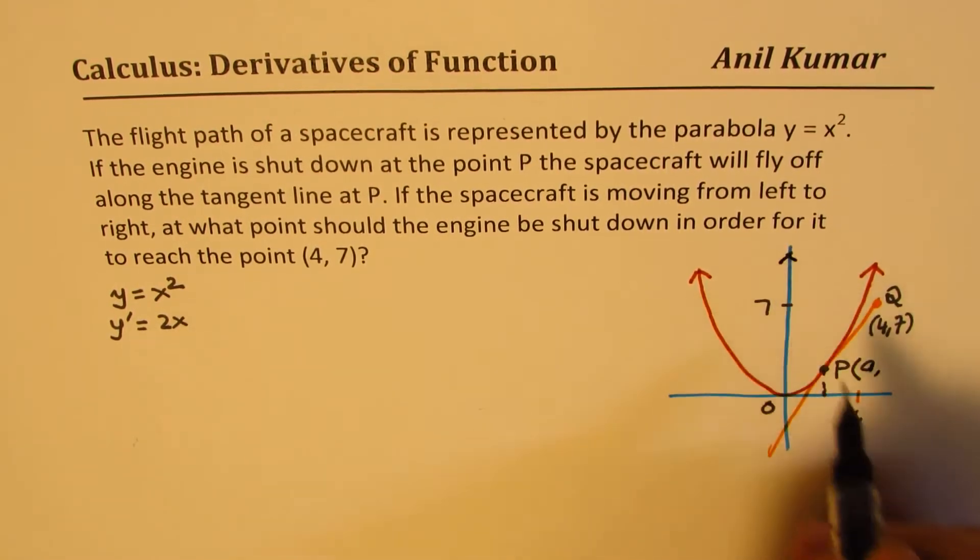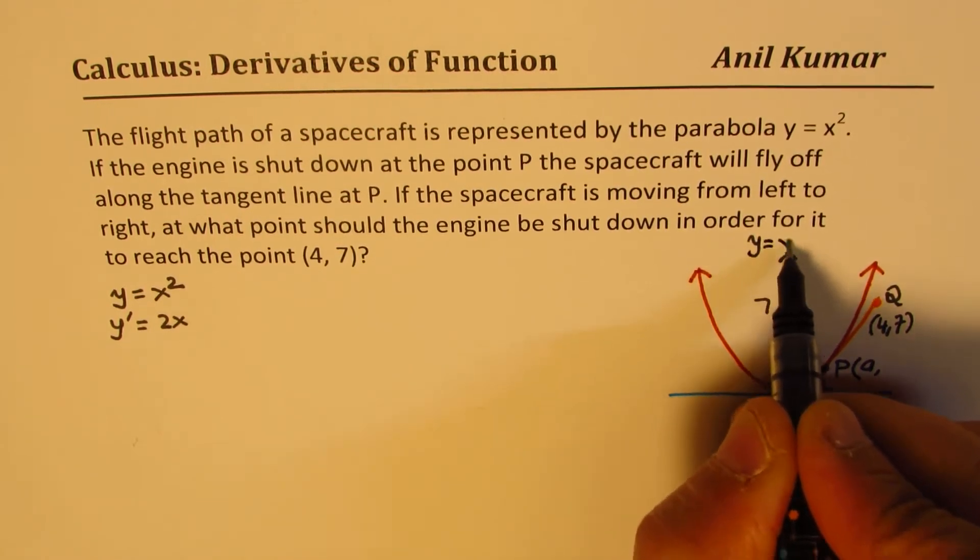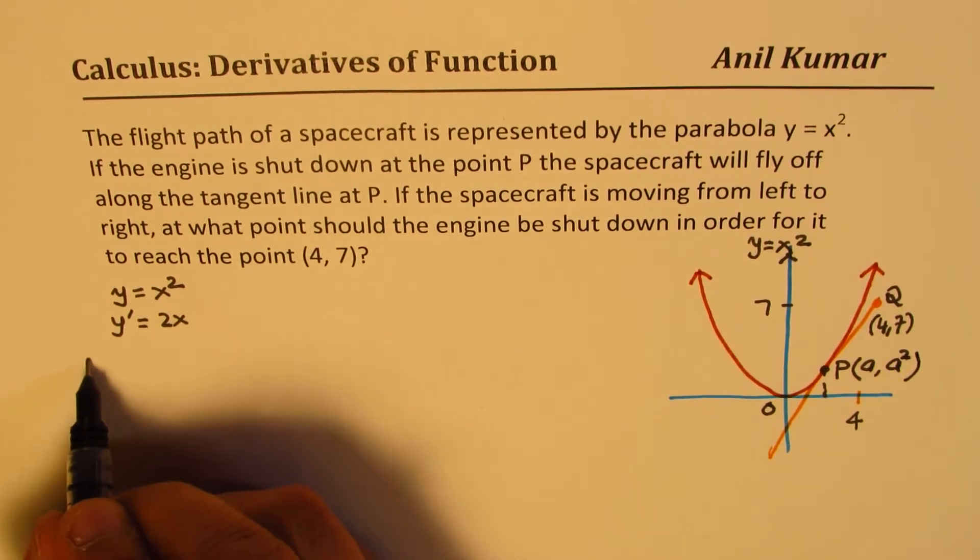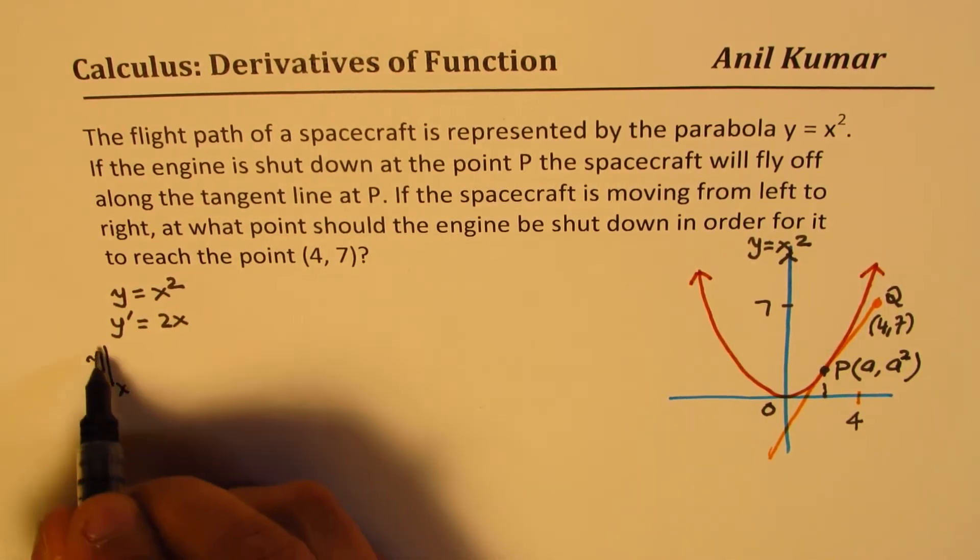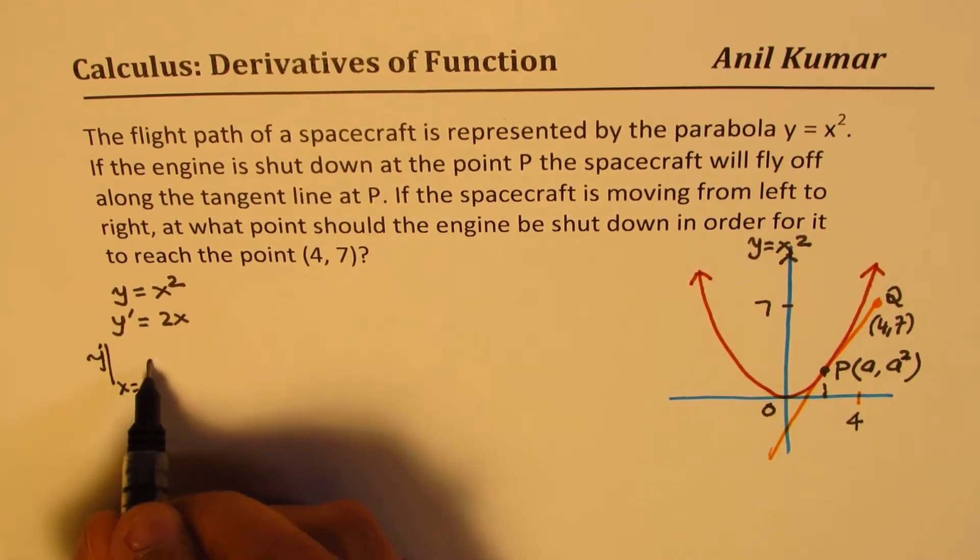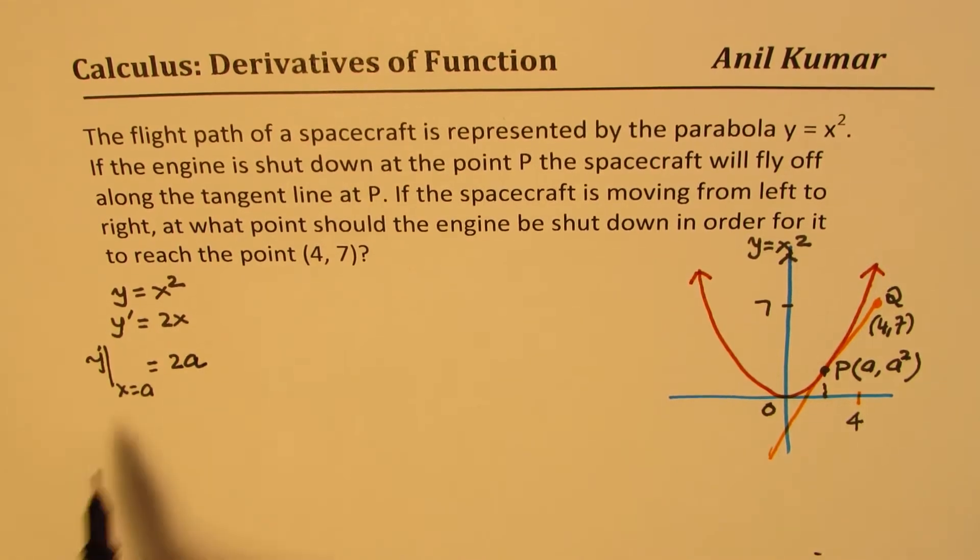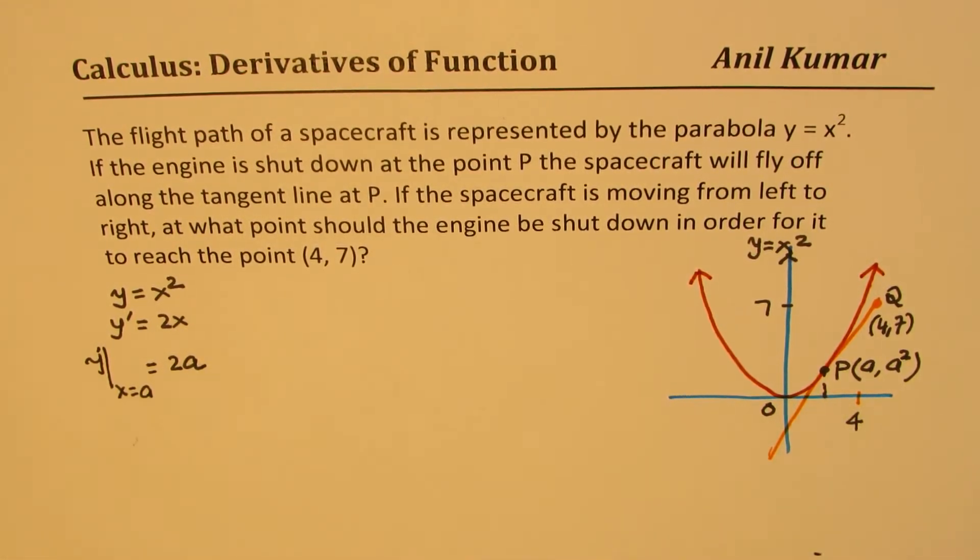Now, if x is a, since the graph is y equals x squared, the y value will be a squared. So at x equals a, the slope of this tangent will be 2a. Is that clear? So that is the slope of the tangent at P.